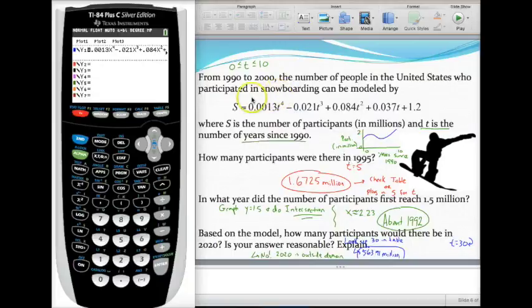In this example we're given a function that models the number of snowboarders we have in millions depending on the years t since 1990. Go ahead and if you need to pause the video to get this big long equation typed in, double check and make sure you've typed it in correctly too. It's easy to mess this up and that screws up the whole problem.